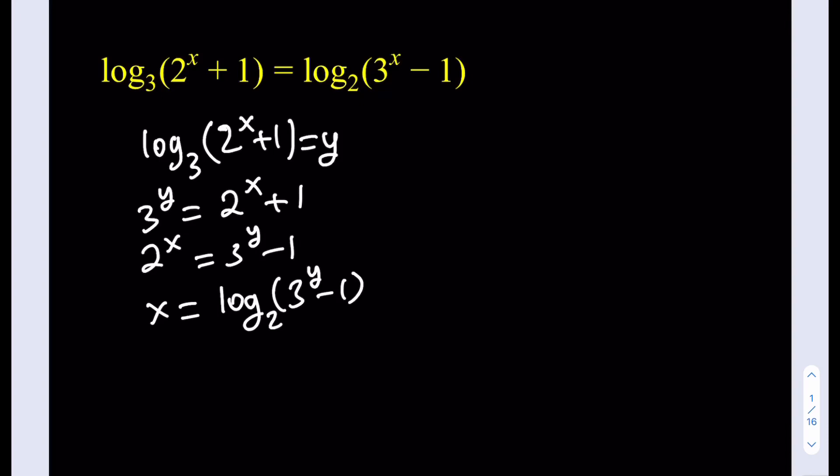So what is that supposed to mean? By solving x, actually we're finding the inverse function. So this is going to equal f⁻¹(y). If I replace x with y and y with x, then the inverse of this function, if I call this function f(x), then its inverse is going to be log₂(3^(x-1)).